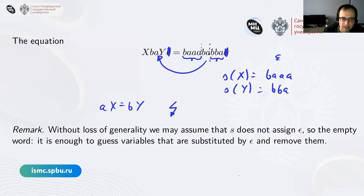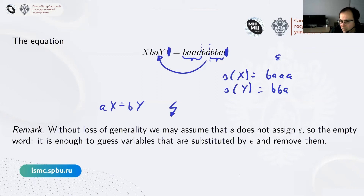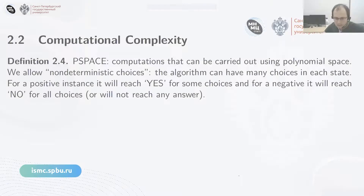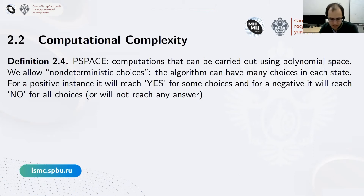Returning to the remark that we do not assign epsilons to variables: in general, if we allow it in the input, we can guess which variables are assigned the empty word and remove them from the instance. This gives an NP reduction to the case that doesn't allow epsilon in the solution. So going forward, we will just consider instances where no variable is assigned epsilon.